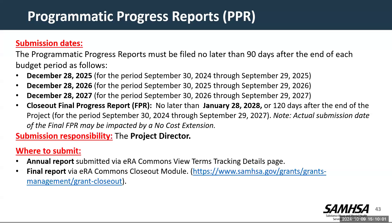The programmatic progress report is due 90 days after the end of each budget period — December 28, 2025 for the first one; December 28, 2026 for the second; and December 28, 2027 for the final one. There will also be a closeout final programmatic progress report due no later than January 28, 2028. This might change depending on whether or not you receive a no-cost extension. The project director is responsible for submitting this. You will submit the annual report — so the first three reports — via ERA Commons under the terms tracker. The final report will be submitted via the ERA Commons closeout module. You will receive information on the closeout process in your final year towards the end of the project.